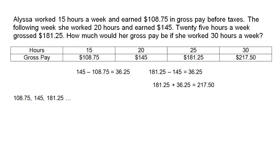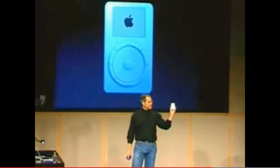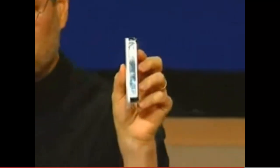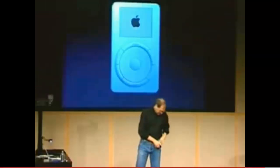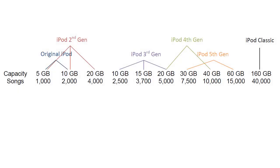Why would the pattern likely change above 40 hours? Here's a final example of patterns in real life. This amazing little device holds 1,000 songs and it goes right in my pocket. Steve Jobs coined the phrase 'put 1,000 songs in your pocket' with the initial release of the iPod. Since then, storage capacities and the estimated number of songs that would fit in iPods has grown. Do they follow a pattern?